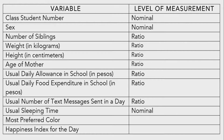Usual sleeping time is nominal. Most preferred color is nominal. Happiness index for the day is ordinal — of course, there is a ranking when it comes to happiness, like from 1 to 10.